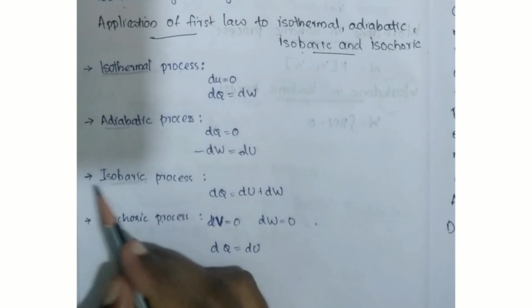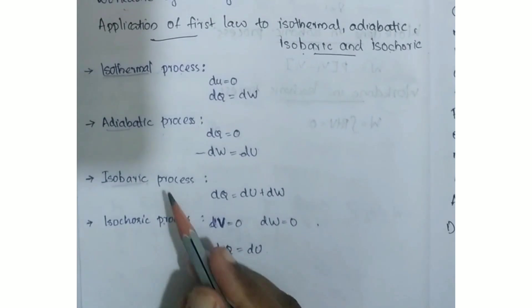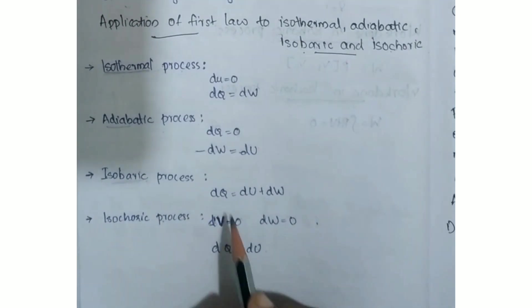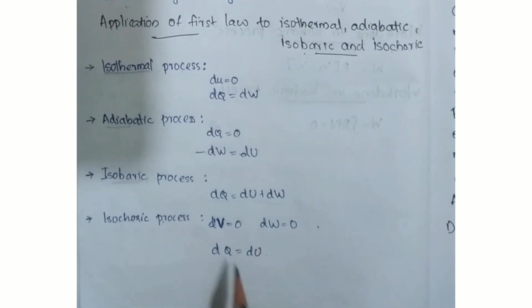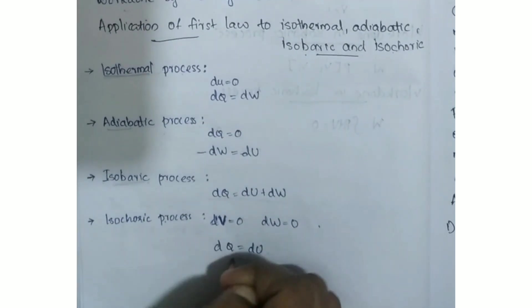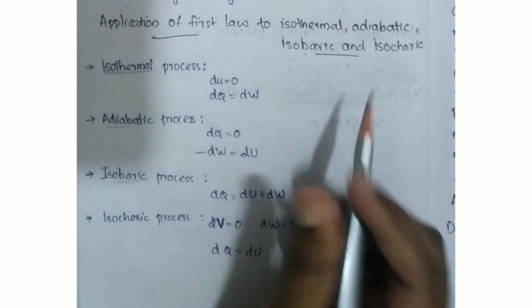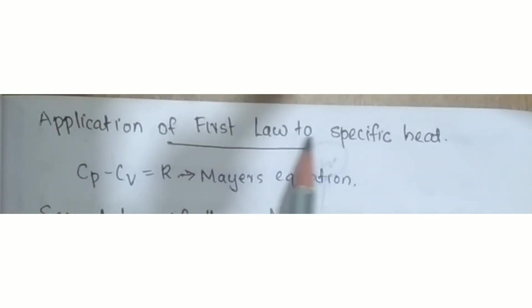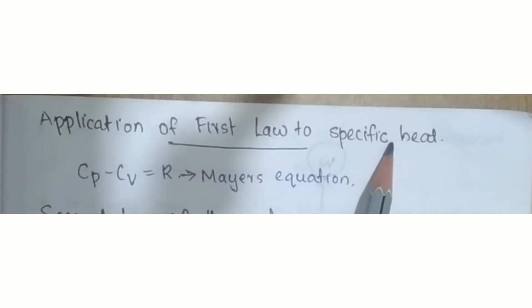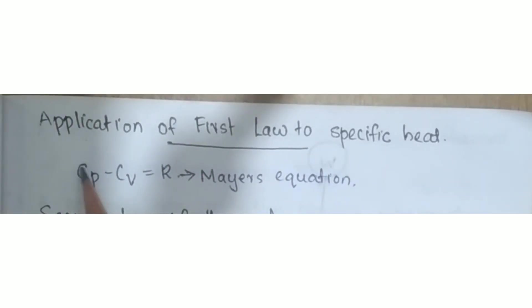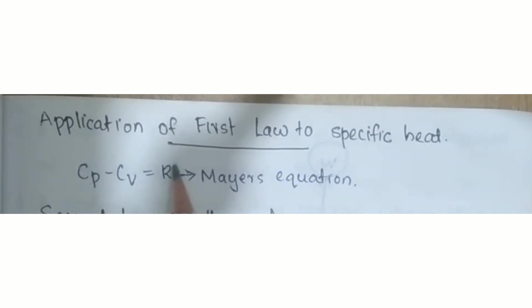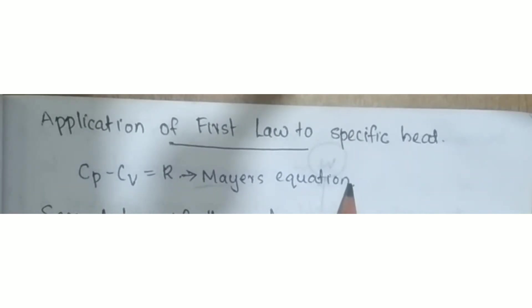In the isobaric case, the equation involves R. The application of the first law to specific heat gives us CP minus CV is equal to R.